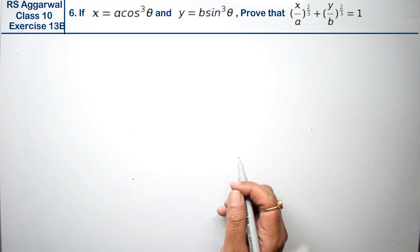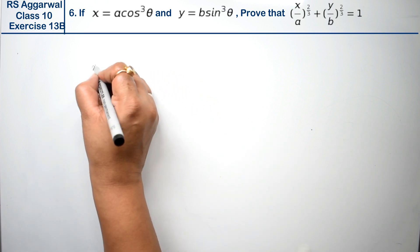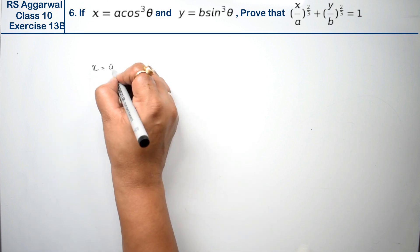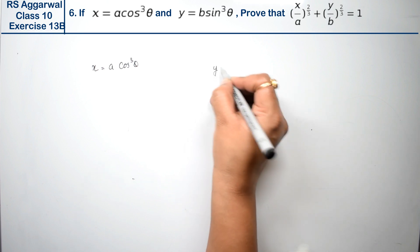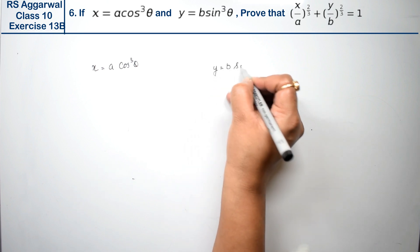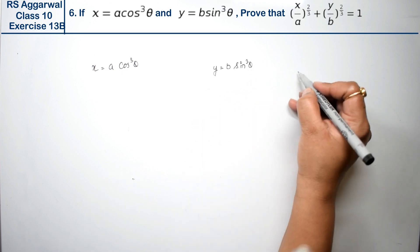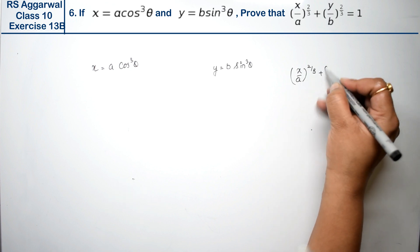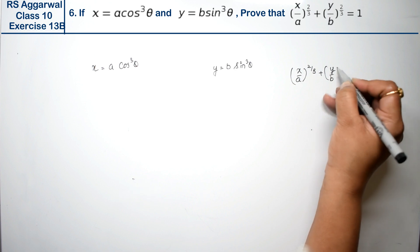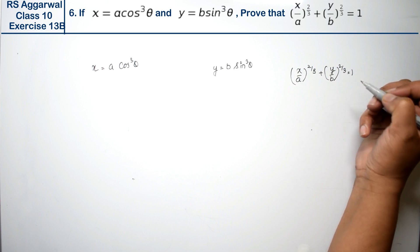Let's do question number 6 of Exercise 13B, that is trigonometric identities. Question number 6 is: if x equals a·cos³θ and y equals b·sin³θ, then prove that (x/a)^(2/3) + (y/b)^(2/3) = 1.